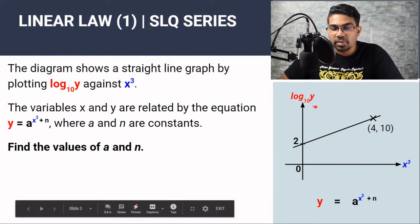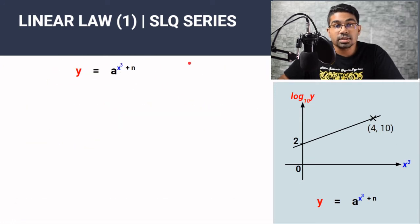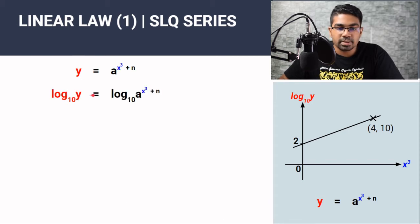From this graph, our capital Y will be log₁₀y and our capital X will be x³. So let's see how to do that. We start with the relation that's given to us: y equals a to the power of x³ plus n. The clue is in the graph. We need to end up with log₁₀y. So we have to add log₁₀ to the left and to the right of the equation. So we get log₁₀y equals log₁₀ of a to the power of x³ plus n.